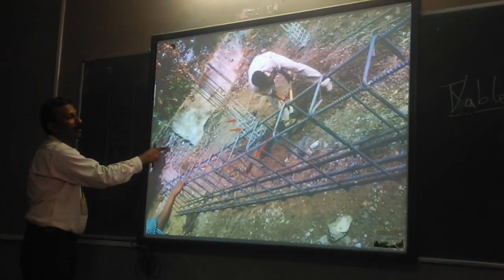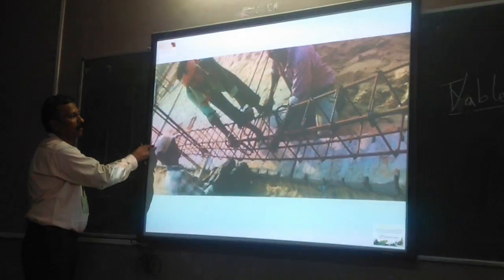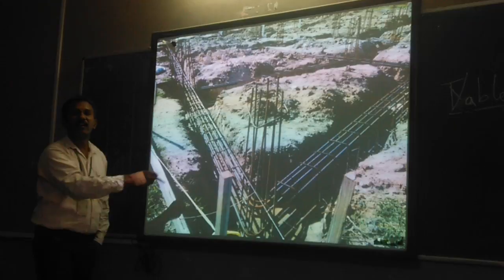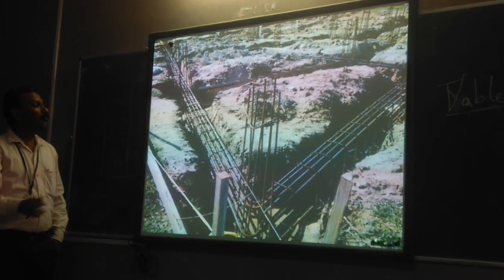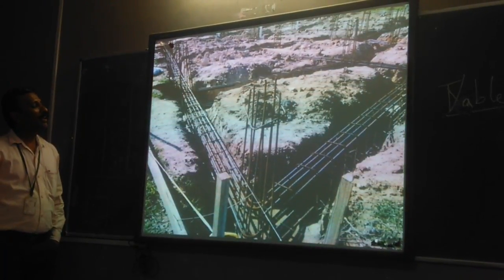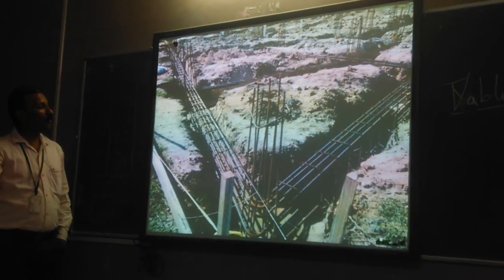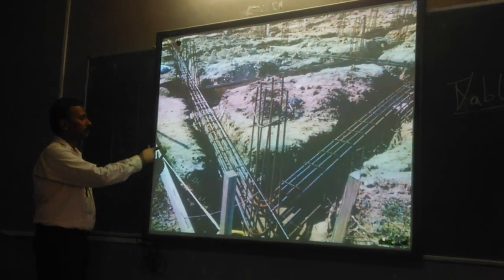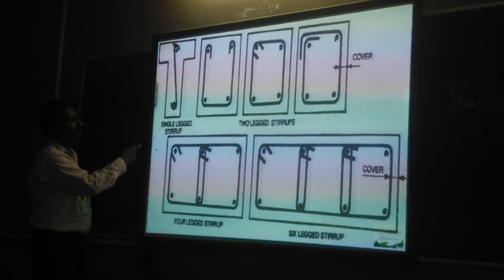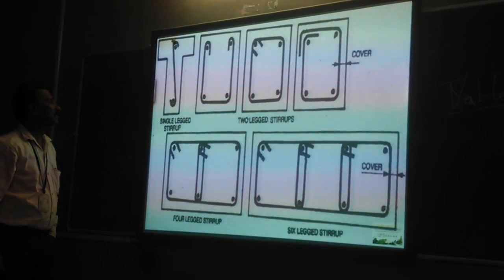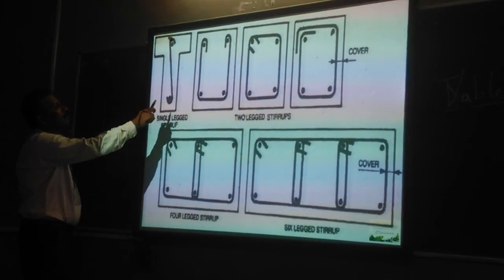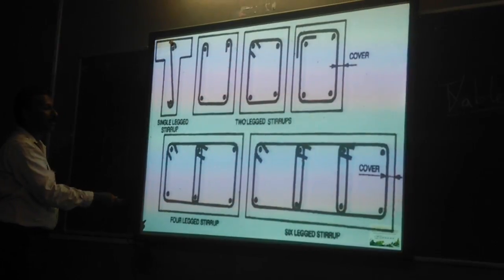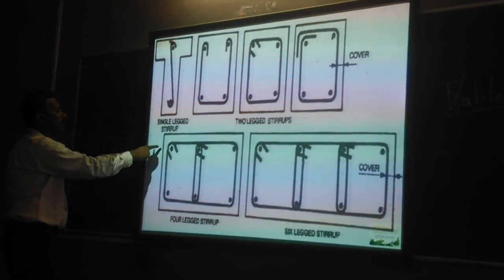This is the stirrup on the beam. This shows the direction of the beam reinforcement. These are the corner rods, which are necessary to provide lateral movement restraint to the beam rods. This provides some stability to the beams at the time of concrete placement. These are the different types of legs: single leg stirrup, two-leg stirrup, four-leg stirrup, and six-leg stirrup.